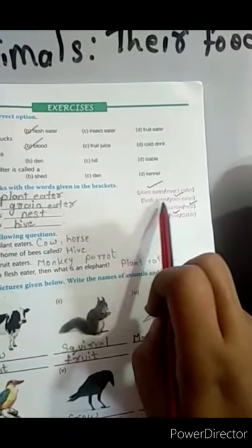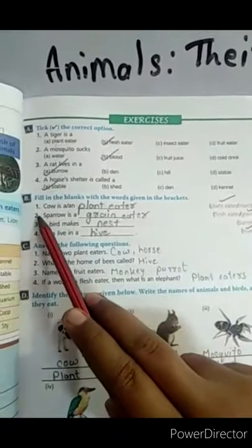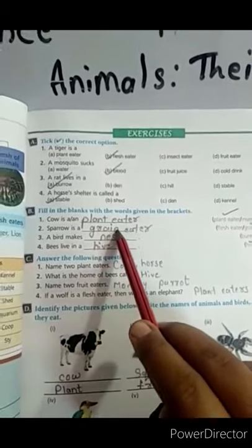A sparrow is a flesh eater or grain eater. And the right answer is a sparrow is a grain eater.